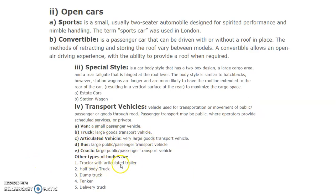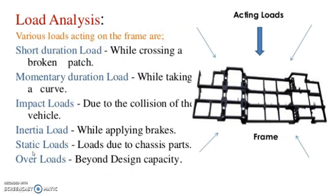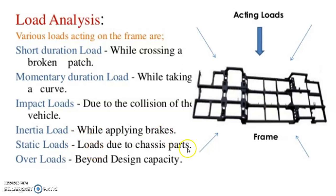Other types of bodies include tractor and articulated trailer, half-body truck, dump truck, tanker, and delivery vehicle. Loads acting on the frame include: short duration load (while crossing a broken patch), momentary duration load (while taking a curve), impact loads (due to vehicle collision), inertia loads (while applying brakes), static load (due to chassis parts weight), and overloads (beyond design capacity).